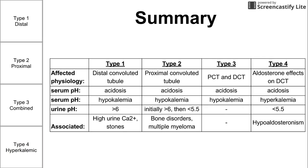Here is a small summary table of the four types — really three types with one combination — covering some important facts including serum pH, urine pH, and associated disorders that are important to remember. I hope this was helpful, and thank you for listening.